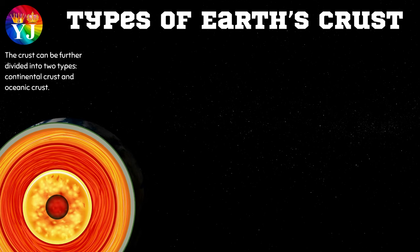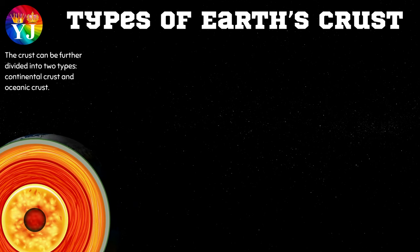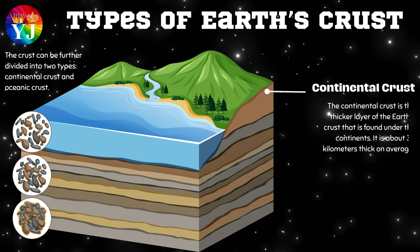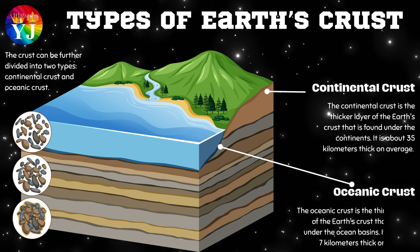The crust can be further divided into two types: continental crust and oceanic crust. The continental crust is the thicker layer of the Earth's crust that is found under the continents, about 35 km thick on average. The oceanic crust is the thinner layer found under the ocean basins, about 7 km thick on average.